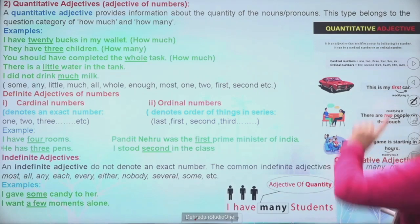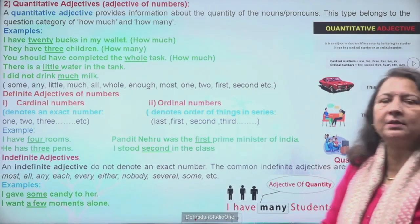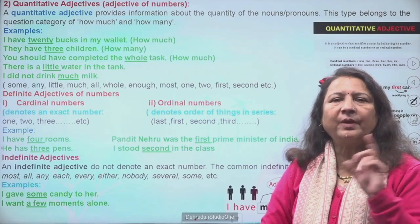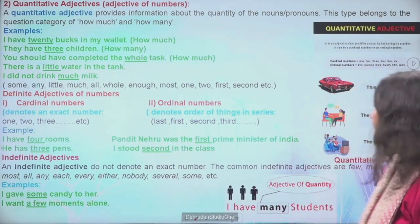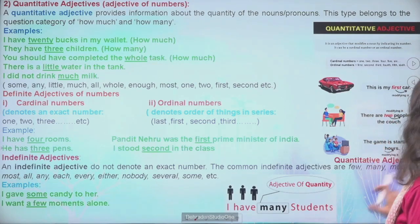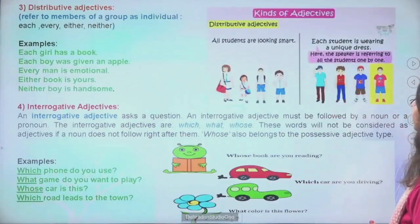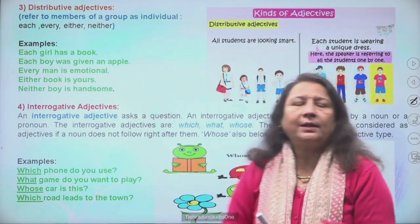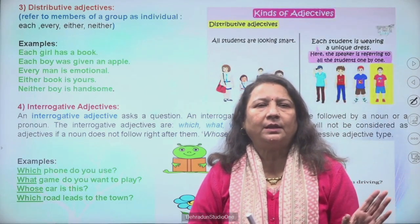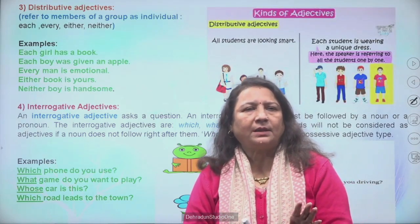Yahan pe humne example mein padha: 'This is my first car' — hum yeh nahi bole ki this is my one car, balki this is my first car — ki yeh meri pehli car hai. 'There are two people on the couch' — quantity bata rahe hain. 'The game is starting in two hours' — quantity ko bata rahe hain. Next humara batata hai: distributive adjective — jo kal detail mein padhe thhe.